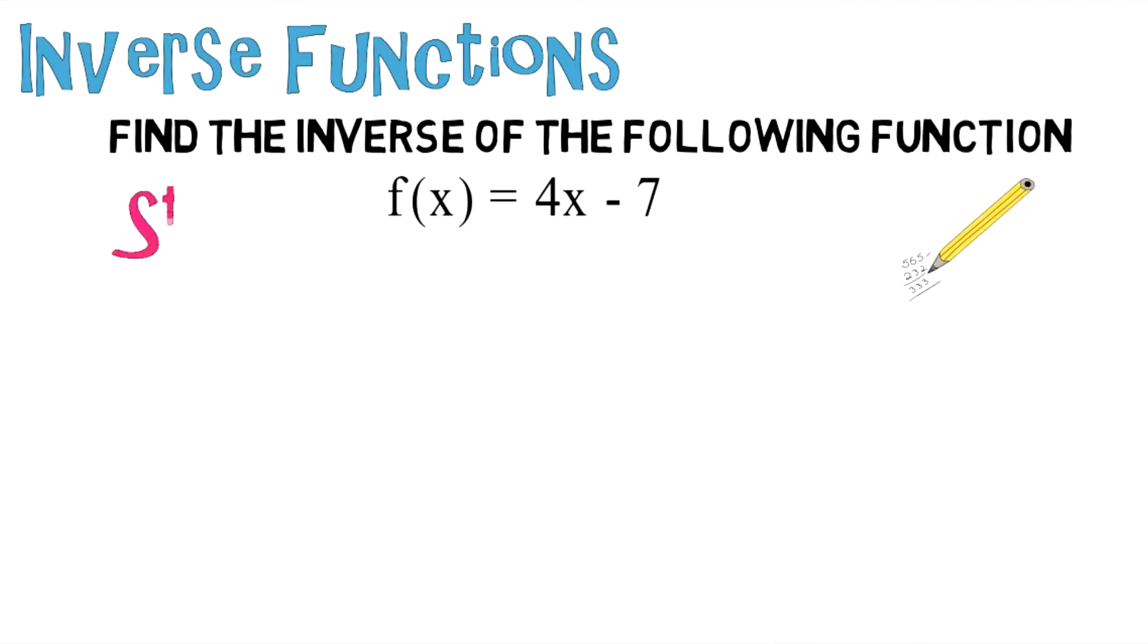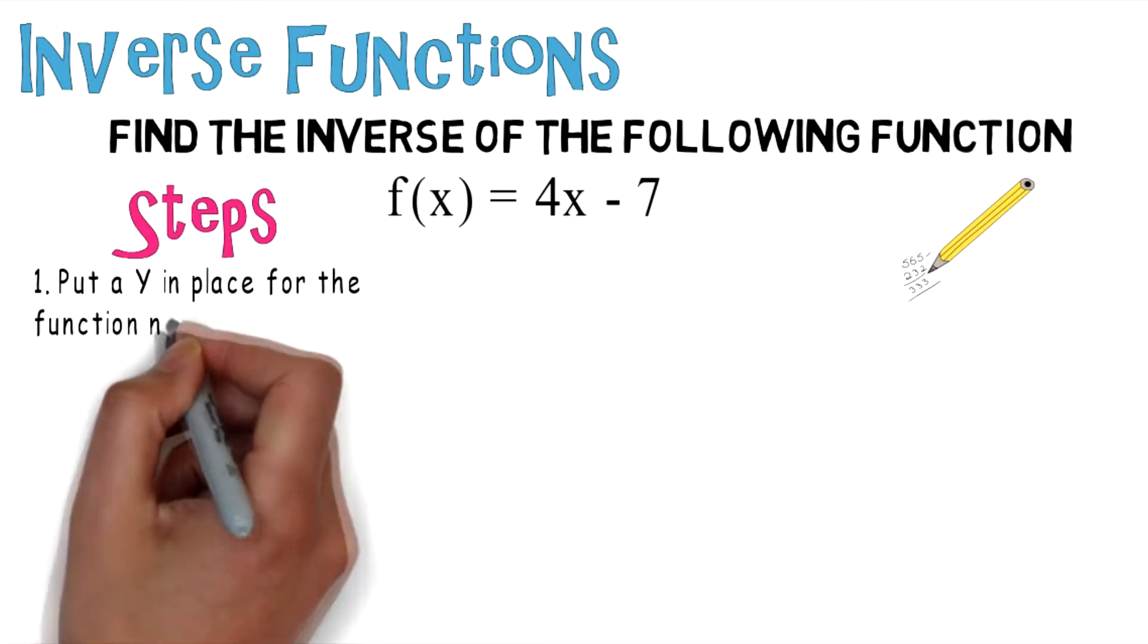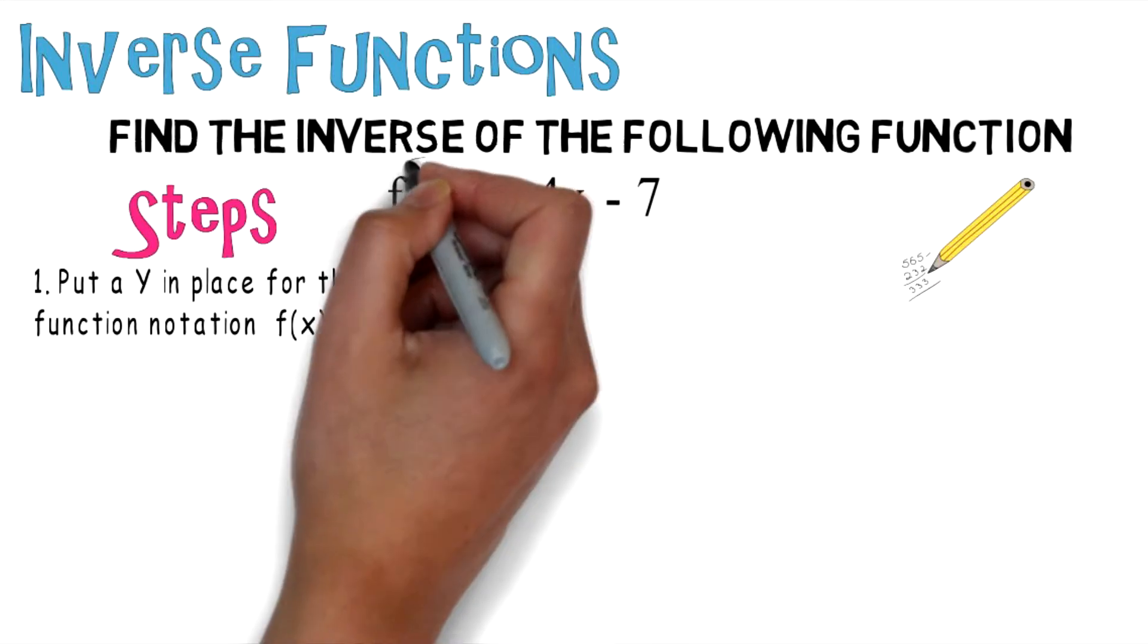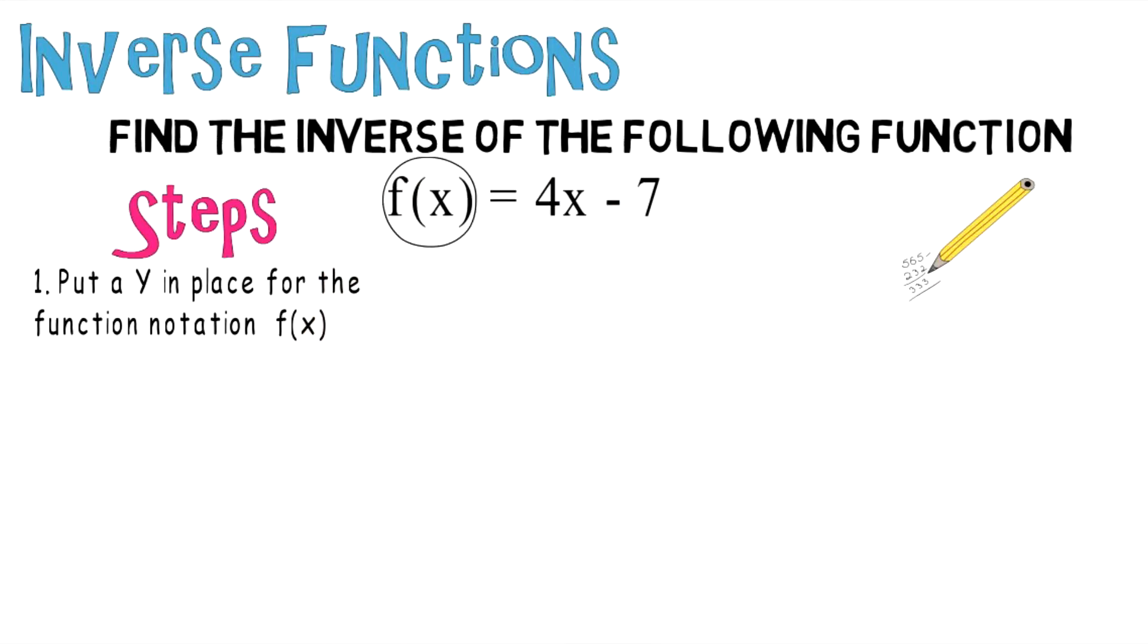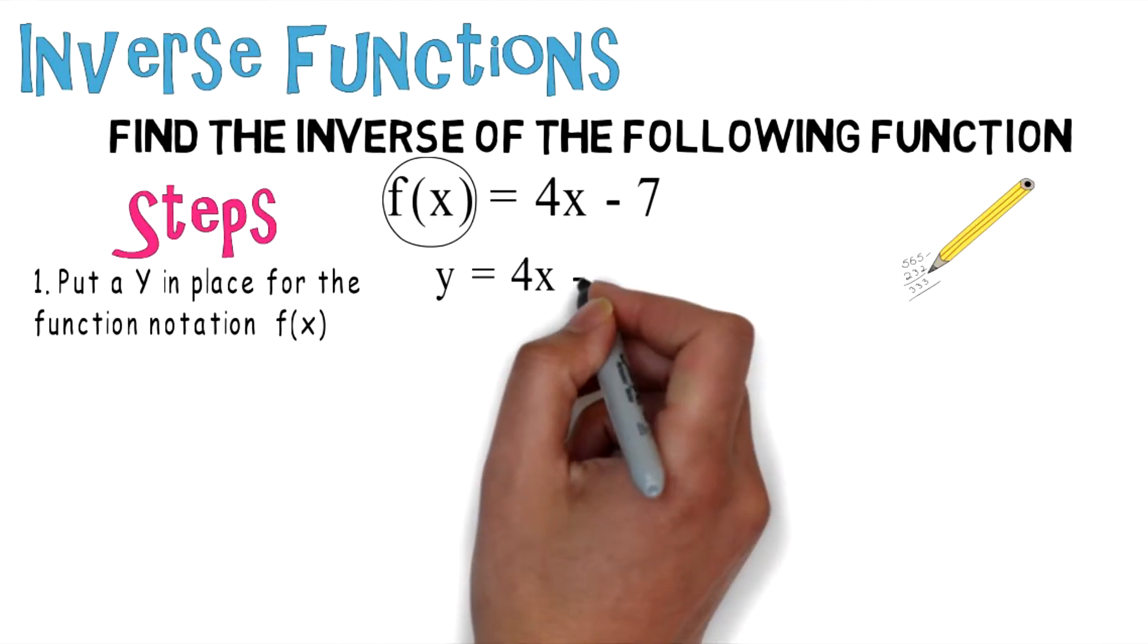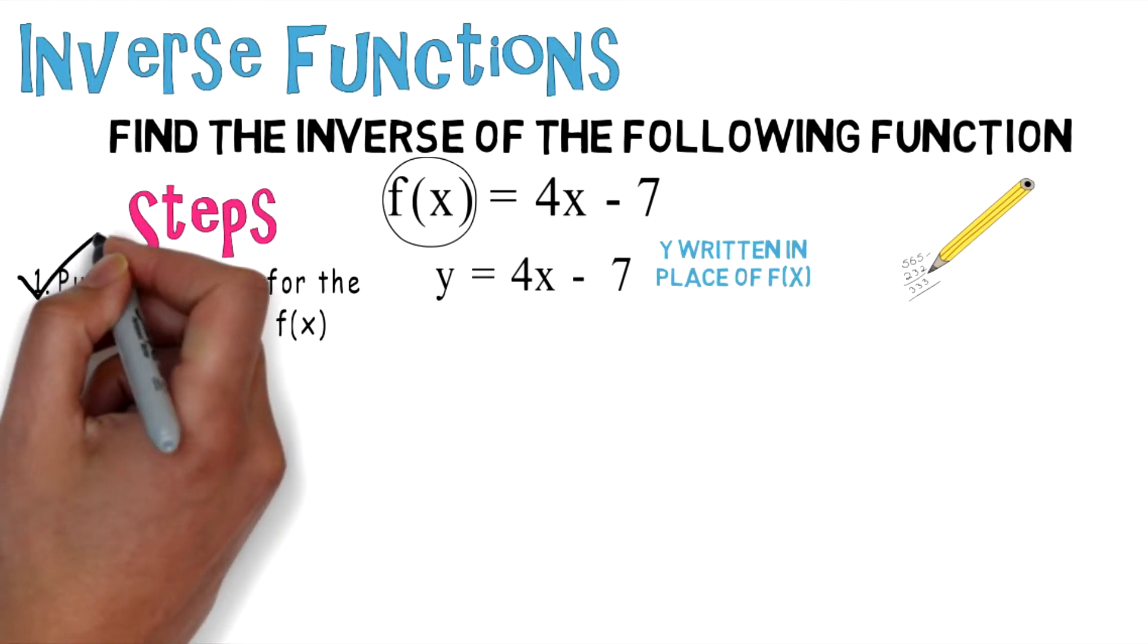Here is the first step: put a y in place for the function notation f(x). There goes your function notation f(x), so we're going to put a y in place of that. You wind up with y = 4x - 7. Notice that y is written in place of f(x), so now you can check off the first step and move on to the second step.